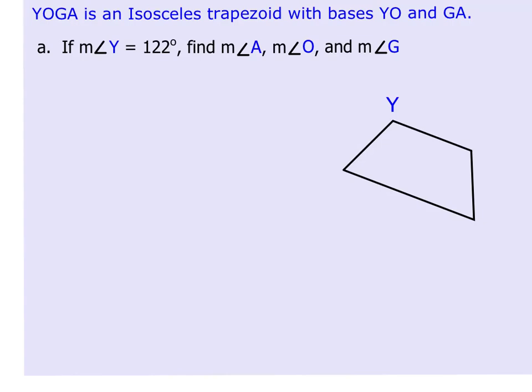This video is a couple of examples involving trapezoids. Now that we've learned the properties of an isosceles trapezoid, we can do this problem. Yoga is isosceles and it has bases Y-O and G-A.